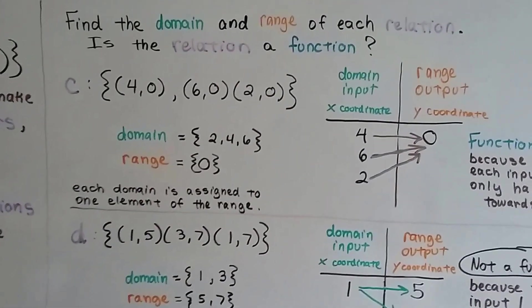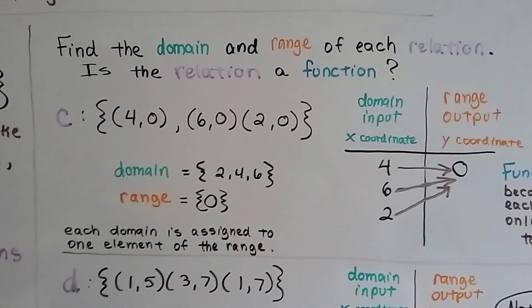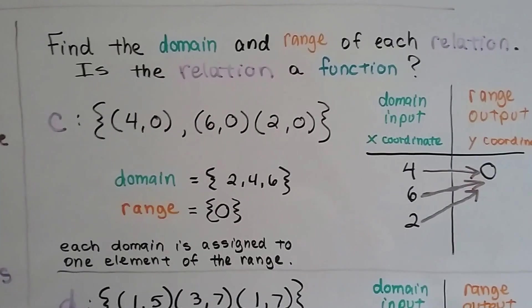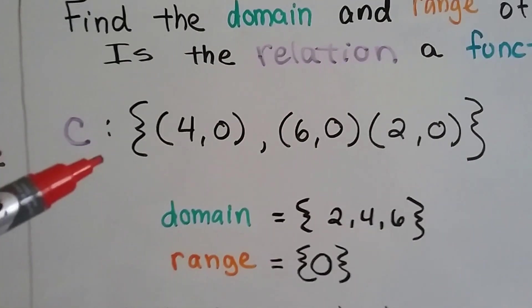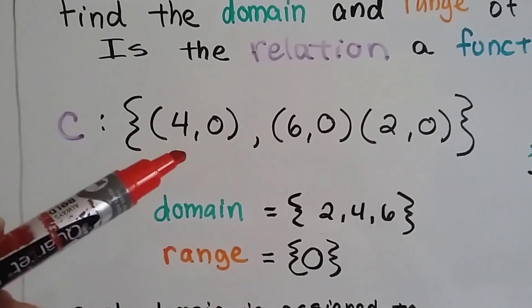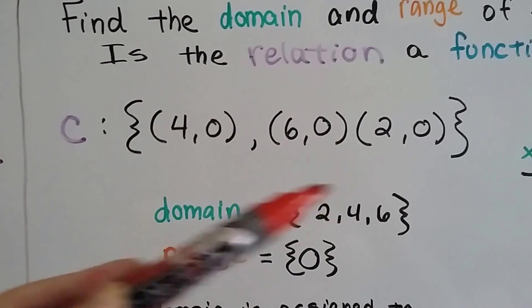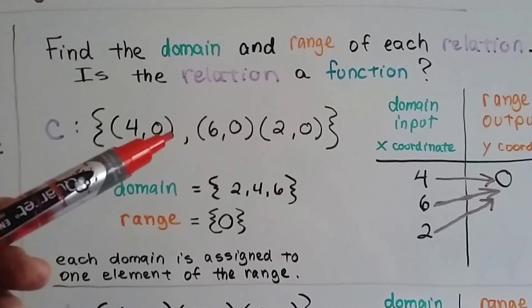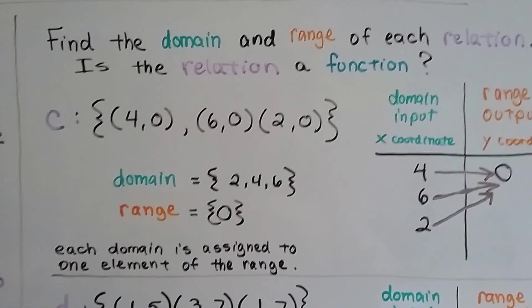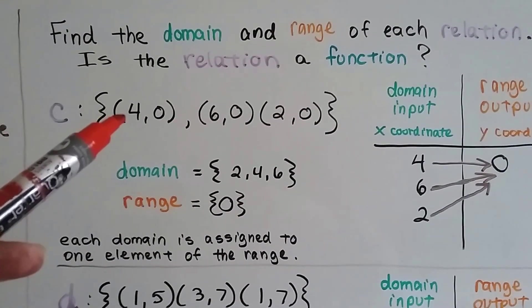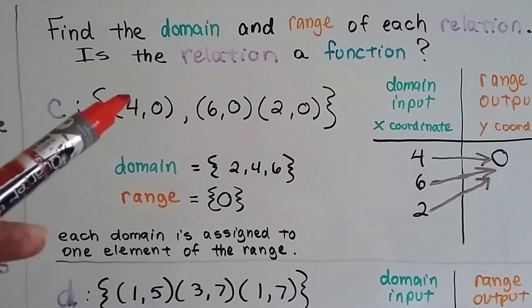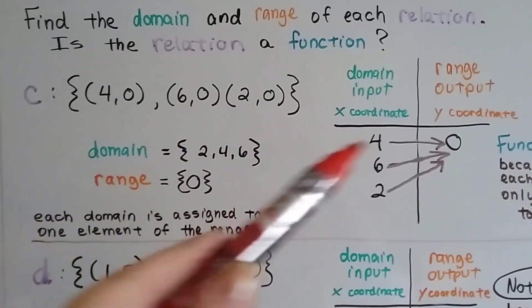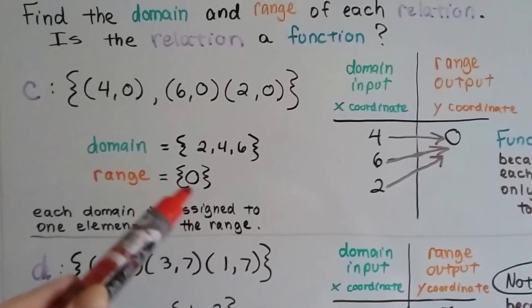So, we can find the domain and range of each relation and we can see if the relation is a function. So, we're given that c is a set of ordered pairs of (4,0), (6,0), and (2,0). So, we need to find the domain and range of each one of these and to find out if it's a function. So, we know the domain is the input. So, that's going to be the x, the 4, the 6 and the 2. And the range, the output is the y coordinate. That's 0 on each one of them.